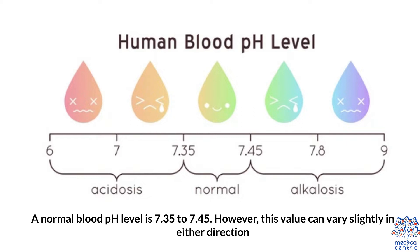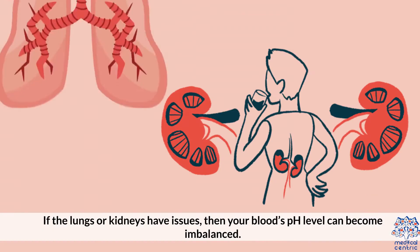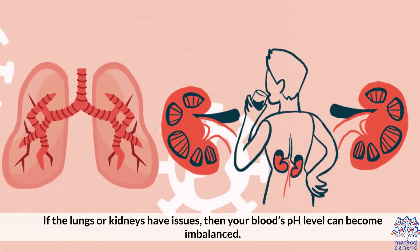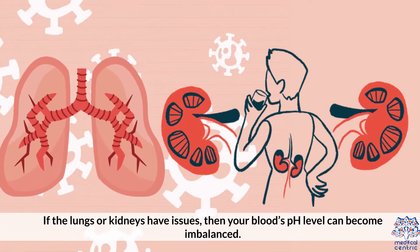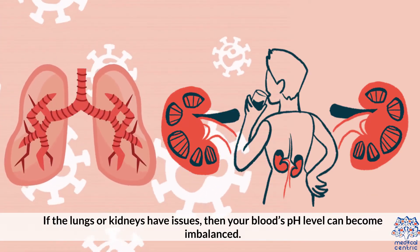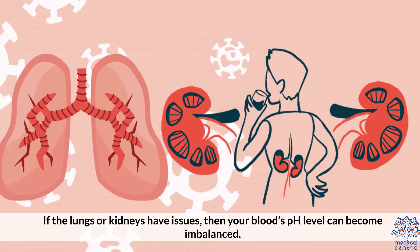However, this value can vary slightly in either direction. If the lungs or kidneys have issues, then your blood's pH level can become imbalanced.